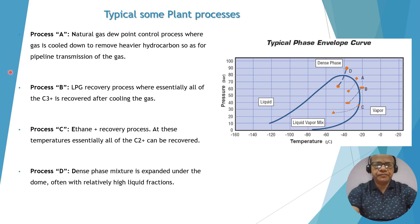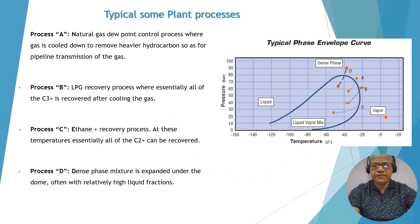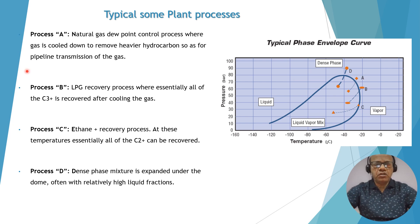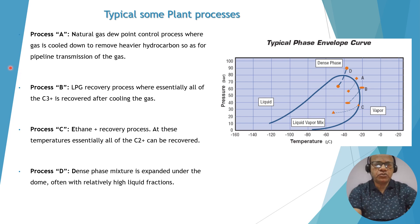Before that, these are the plant processes and this is a phase envelope. On the x-axis it is temperature and on the y-axis it is pressure. The right side is vapor, the left side is liquid, and we have a liquid-vapor mixture in between this envelope. So if you look at process A,